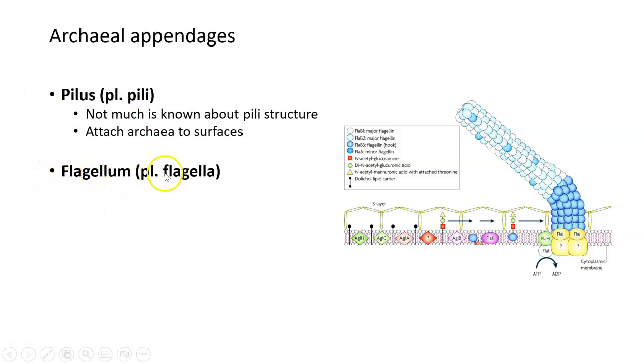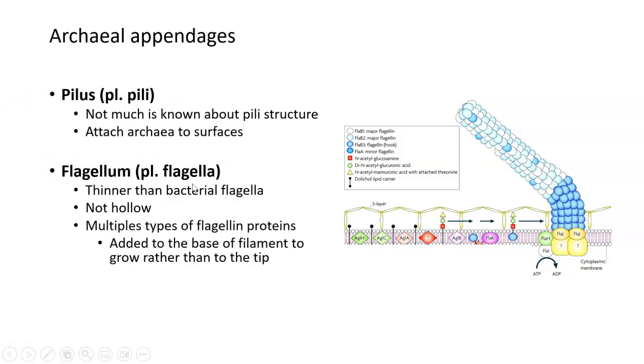Archaea also have flagella. They are thinner than bacterial flagella, and they're also not hollow. So we talked about the flagella structure of a bacteria being kind of a tube or a cylinder. That's not the case for archaeal flagella. They are actually just one solid mass of protein. They're made of multiple different types of flagellin proteins rather than just one, as in bacteria.